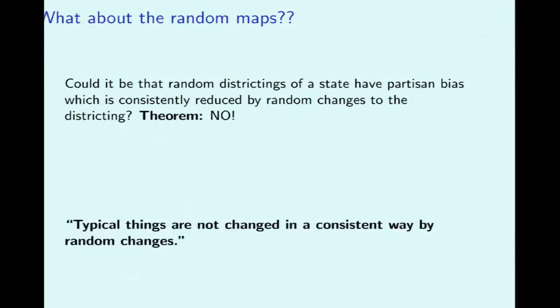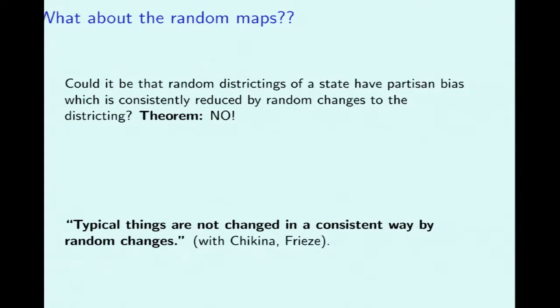We proved a theorem that says no — this is not possible. The imprecise statement of the theorem is that if you have a typical object and make a sequence of random changes to it, it shouldn't change in a consistent way. This is true for districtings but also in all sorts of general settings. This theorem was proved with Maria Chikina at the University of Pittsburgh and Alan Frieze, also in the math department at CMU.